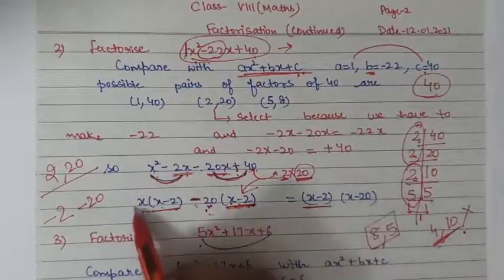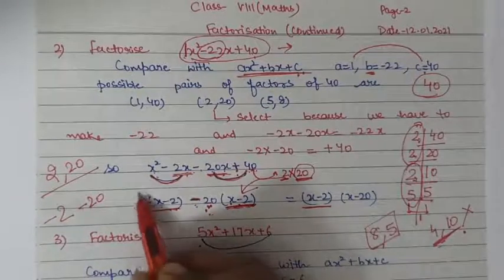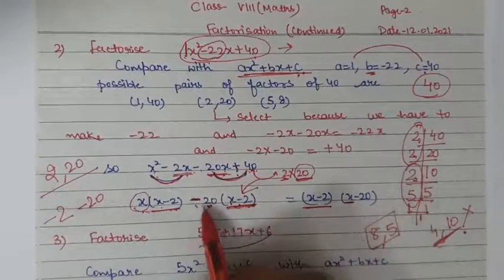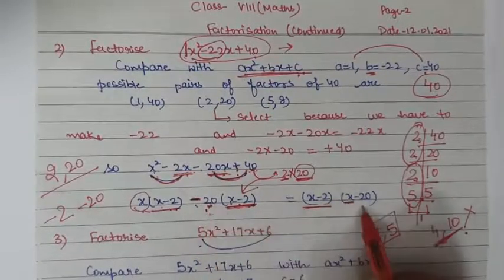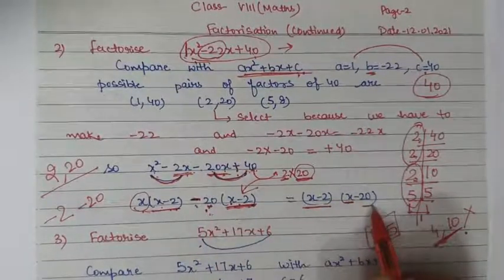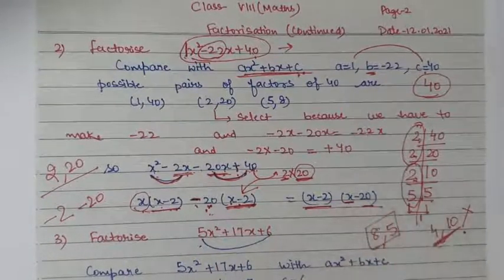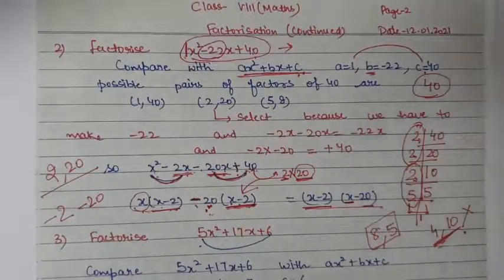What is left inside after taking (x minus 2) common? We get x and minus 20. So the final factorization is (x minus 2)(x minus 20). Clear, children?